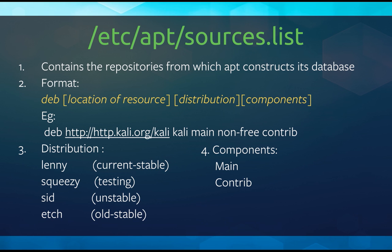The format of sources.list is: 'deb' followed by a space and then the location of the resource. For example, http.kali.org for Kali Linux, then the distribution — Kali — and then the components such as main, non-free, contrib. This gives you the level of support available from the OS project developers. In Ubuntu, the distribution may contain code names like Lenny, Squeezy, Sid, or HCH. Lenny stands for current stable, Squeezy for testing, Sid for unstable, and HCH for old stable.